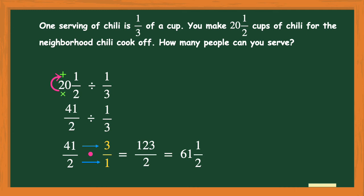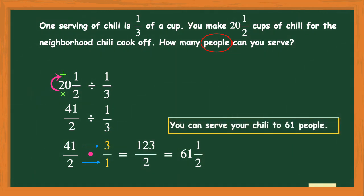Before I'm done with any word problem, I go back and read the question: how many people can you serve? I have 61 and a half, but I've never seen half a person. I have enough chili to serve 61 people but not quite 62, so the answer is 61 people — and I'll keep that little bit left over for myself.